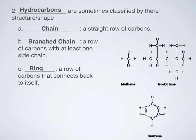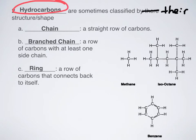So what are our types of hydrocarbons? Hydrocarbons are sometimes classified by their structure and shape. Not only do we have three broad categories of hydrocarbons, but we also have three general shapes or structures.